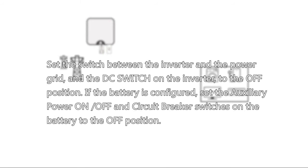Set the switch between the inverter and the power grid, and the DC switch on the inverter to the OFF position. If the battery is configured, set the auxiliary power ON/OFF and circuit breaker switches on the battery to the OFF position.